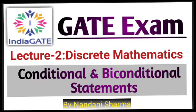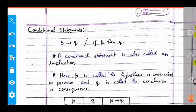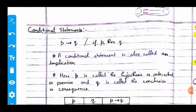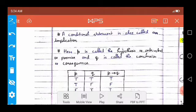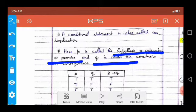Hello everyone and welcome to my YouTube channel. In this session of discrete mathematics, we talk about conditional and biconditional statements. A conditional statement is represented with an arrow, where p implies q. Statement one is p and statement two is q, meaning p implies q — also called 'if p then q.' It is also called an implication. Here, p is called the hypothesis or premise, and q is called the conclusion or consequent.